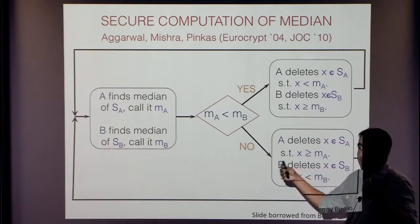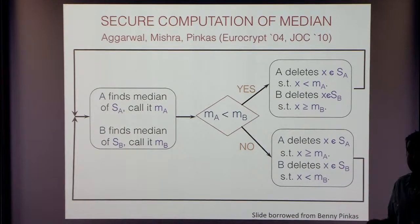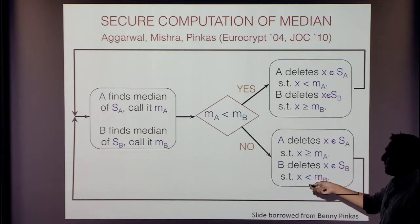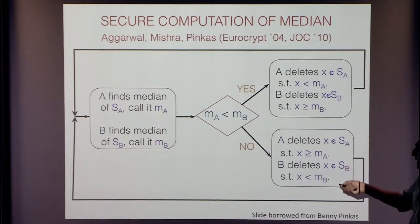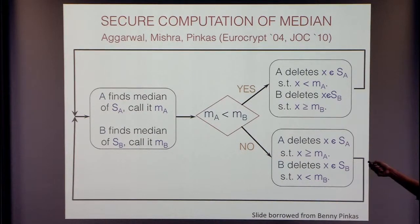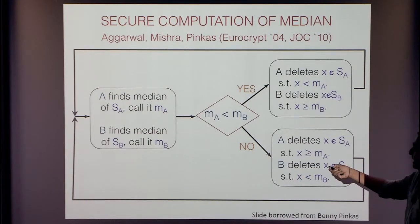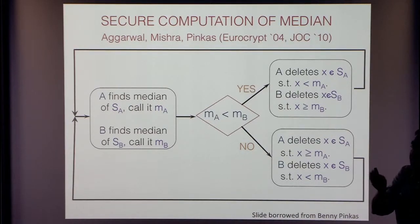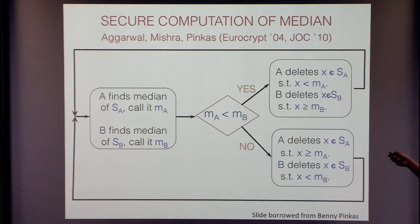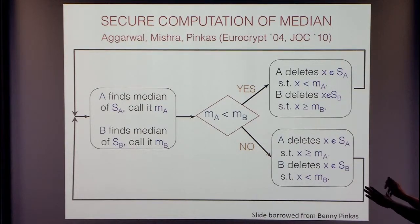Alice and Bob have a set of inputs each. The protocol goes in iterations. In each iteration, Alice and Bob locally compute their median. Let's say SA is Alice's set and SB is Bob's set. They individually compute the median, then they securely compare their medians. They check if MA is less than MB, and depending on the result of this secure computation, they prune their data. If Alice's median is less than Bob's median, the final median will not lie in the top half of Alice's input or the bottom half of Bob's input, so those elements are pruned and you recursively proceed.